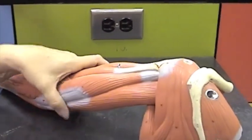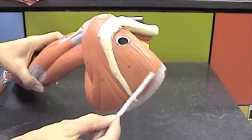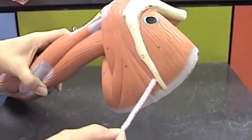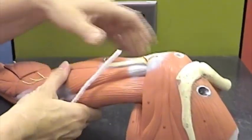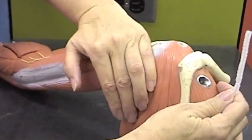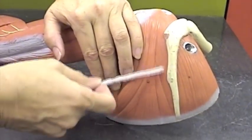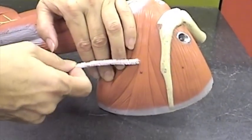Here we have supraspinatus, a muscle lying in the supraspinous fossa. Here's the spine of the scapula. If I cover these two muscles, we have infraspinatus, a muscle lying in the infraspinous fossa.